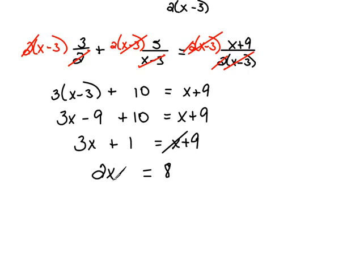9 minus 1 would be 8. And now, we still need to get the x alone, so let's divide both sides by 2 to get x equals 4. So, we're saying that our final answer is x equals 4.